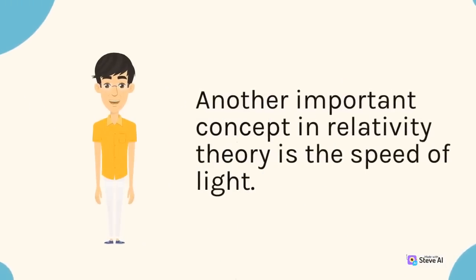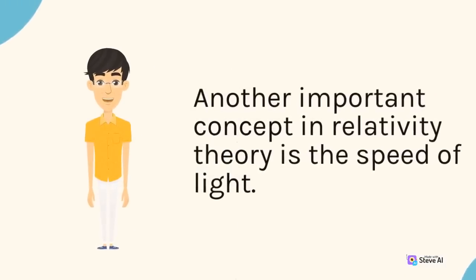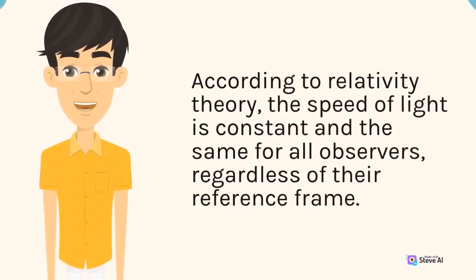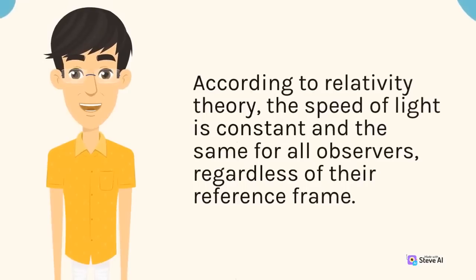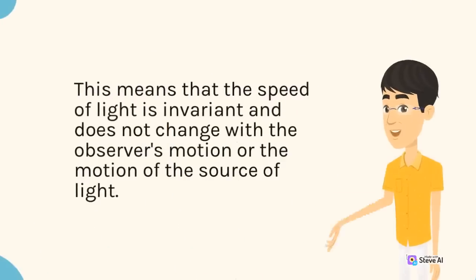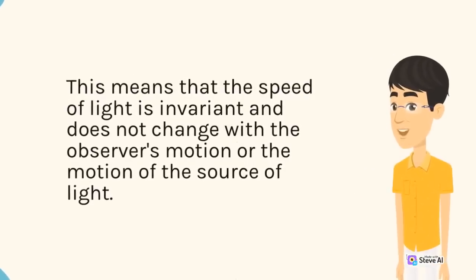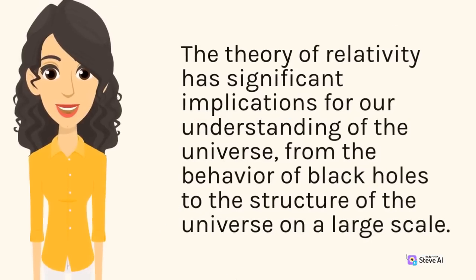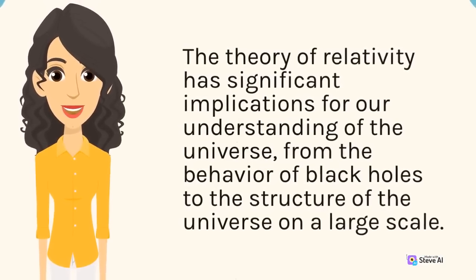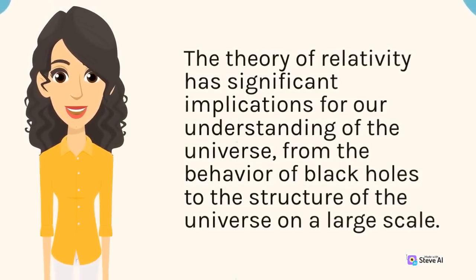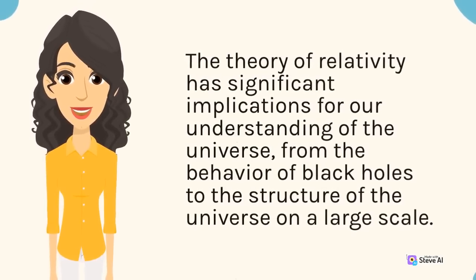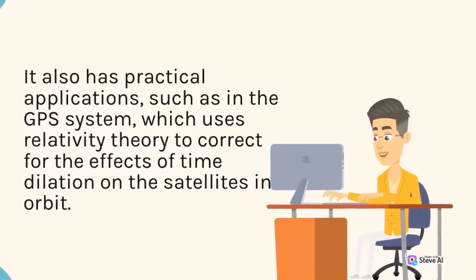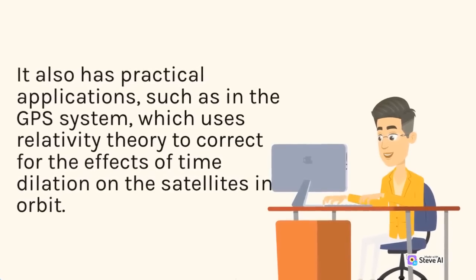Another important concept in relativity theory is the speed of light. According to relativity theory, the speed of light is constant and the same for all observers, regardless of their reference frame. This means that the speed of light is invariant and does not change with the observer's motion or the motion of the source of light. The theory of relativity has significant implications for our understanding of the universe, from the behavior of black holes to the large-scale structure of the universe. It also has practical applications, such as in the GPS system, which uses relativity theory to correct for the effects of time dilation on satellites in orbit.